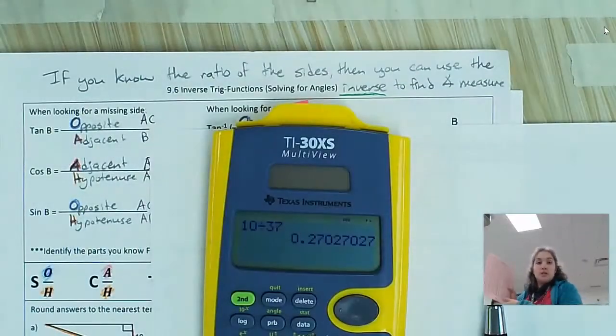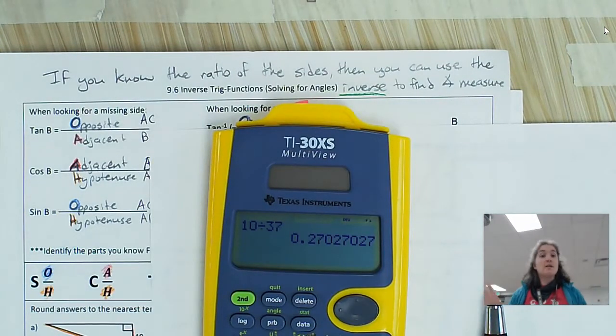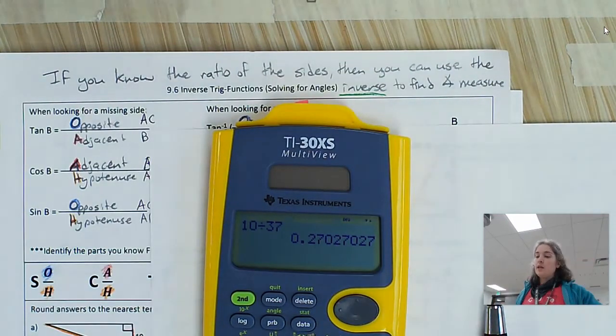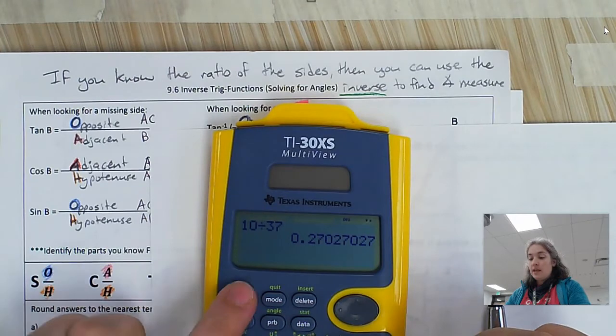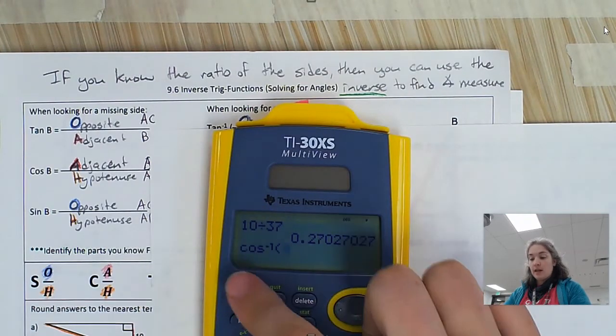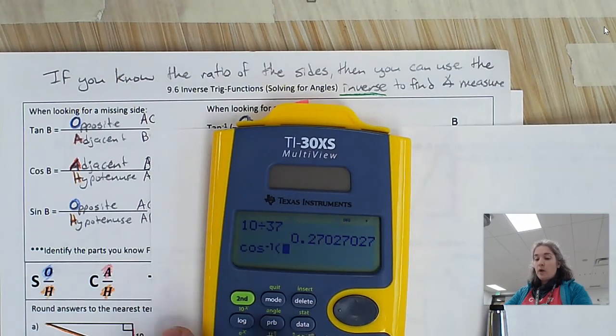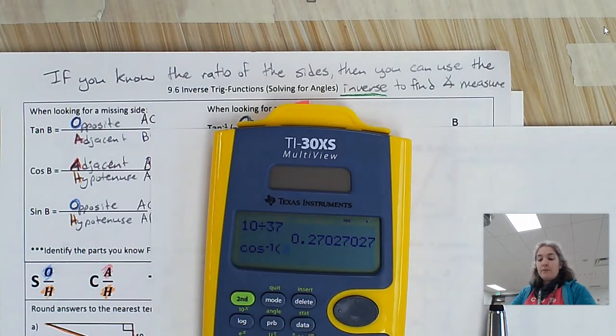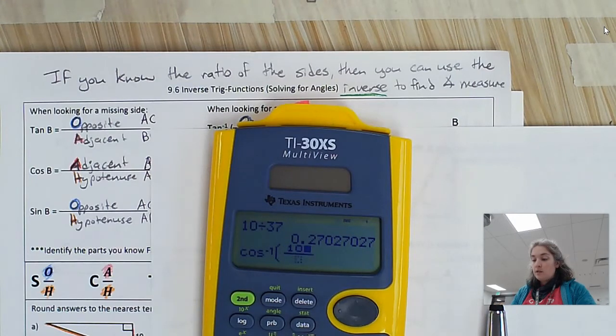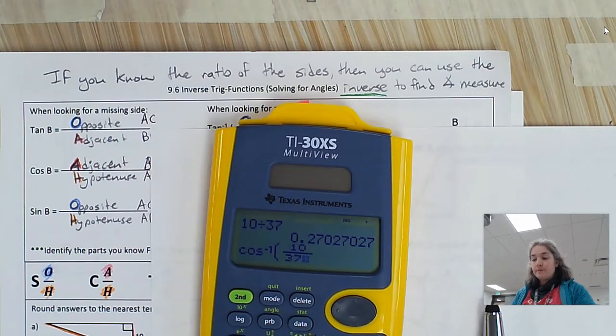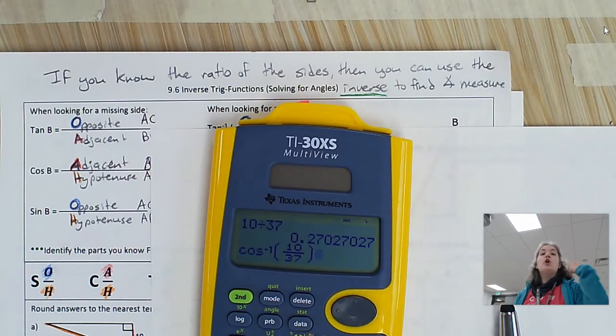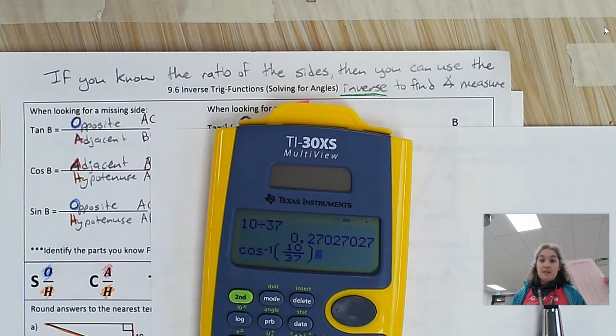Now, again, we used to have books, entire books on this. Your calculator has it all in there. Woo-hoo, technology. So what I'm going to do is I'm going to hit inverse cosine, second cosine. And I'm going to flip-flop where my x and my 10 over 37 is. So I'm going to now do 10 divided by 37. And this is going to look up what that angle is. We know from this that it should be about 74 degrees, about.